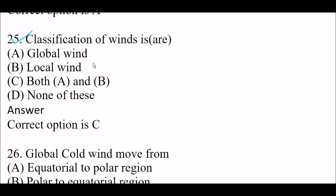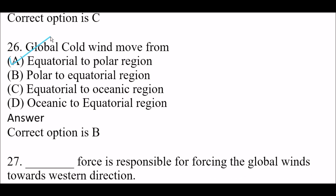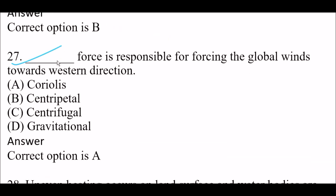Next question: global cold wind moves from — Option A: equatorial to polar region. Option B: polar to equatorial region. Option C: equatorial to ocean region. Option D: ocean to equatorial region. Right answer is Option B — polar to equatorial region. Next question: blank space force is responsible for forcing the global winds to move in a westward direction.